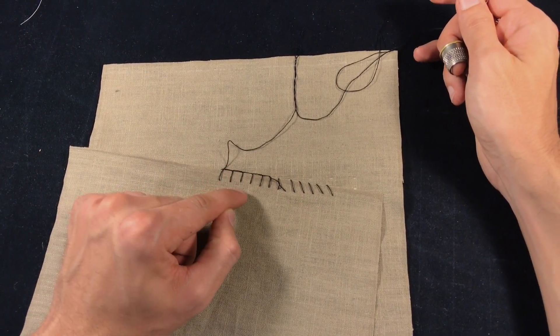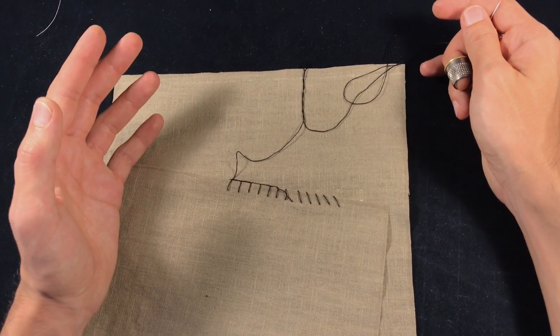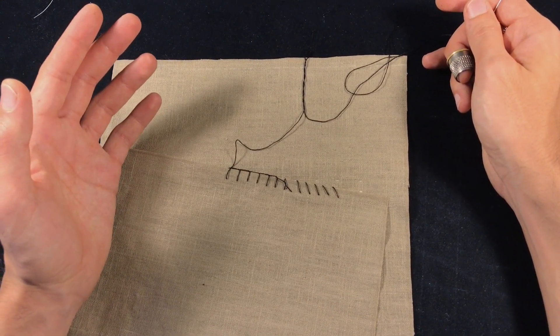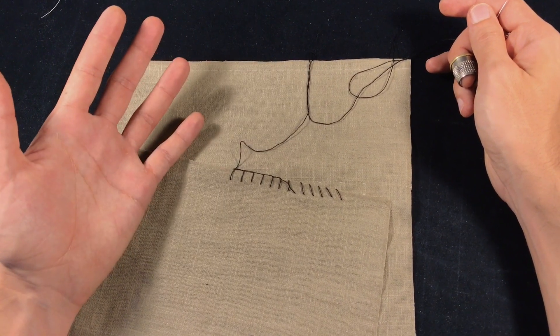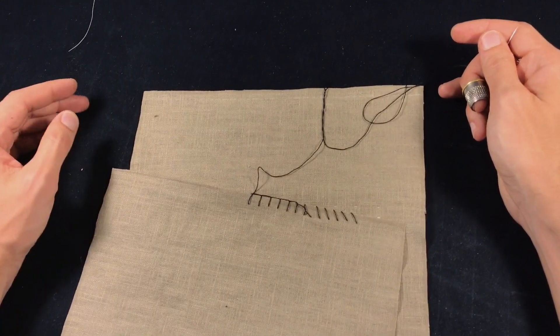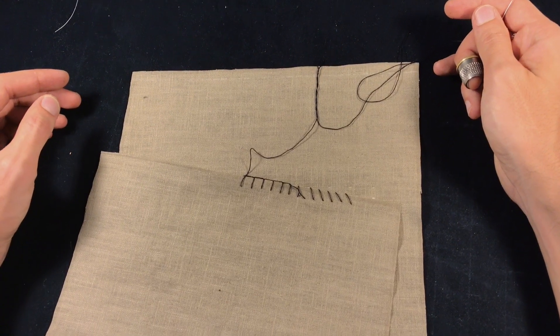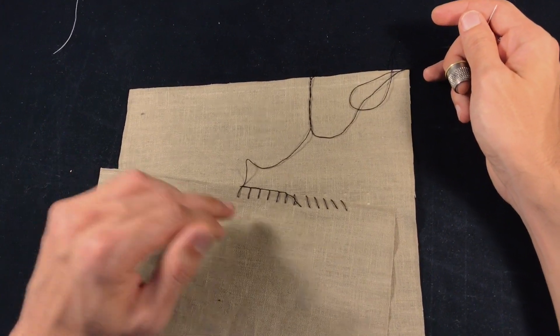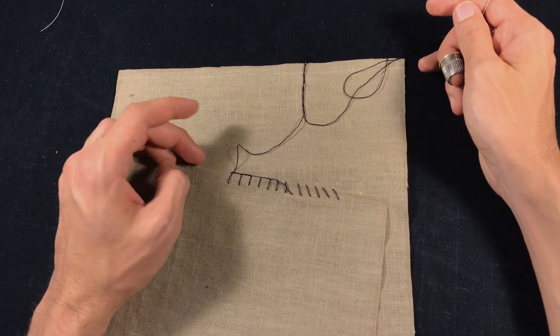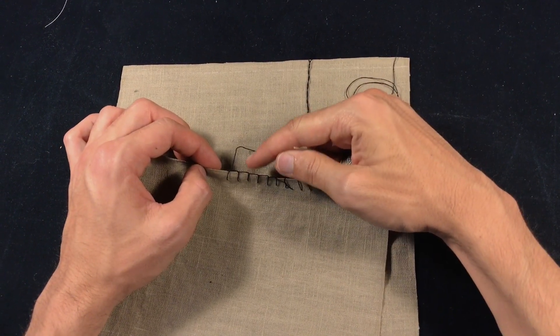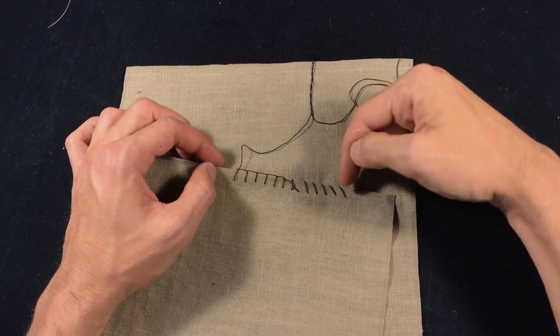But if you have access to an overlocker, domestic overlockers are not that expensive, and if you know how to set them up, they can be as good as an industrial one. But if you really feel you need to serge an edge and want to do it by hand, for whatever reason, then I would say the blanket stitch is the better one between the two.